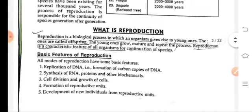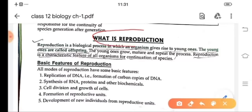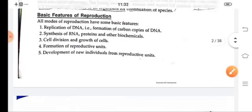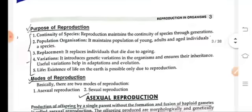We will move on to reproduction. What is reproduction? Reproduction, it is a biological process in which an individual or an organism gives rise to its own offspring. These offspring, they grow, mature and again repeat the process. It is the characteristic of all living organisms and the basic features of reproductions are that replication of DNA takes place, synthesis of RNA takes place, cell division and growth of cells is there, formation of reproductive units and the development of individual from these reproductive units.